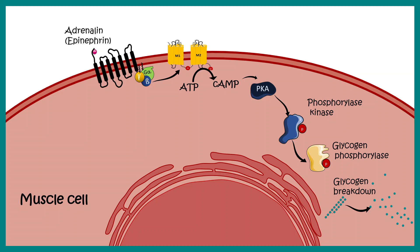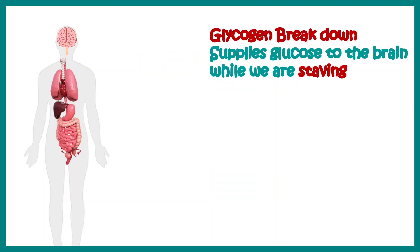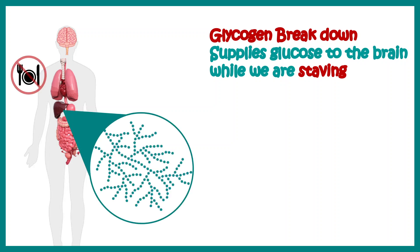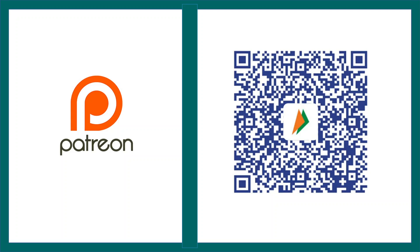Glycogen breakdown also supplies glucose to our brain while we are starving. During starvation blood glucose is low, but the brain cannot stop working because it needs glucose for its functioning. In that circumstance glycogen from the liver is broken down into glucose residues and channeled to the brain for energy. This shows how glycogen metabolism is relevant to our physiology.